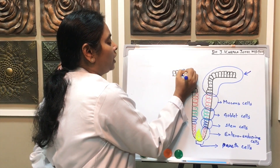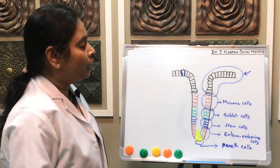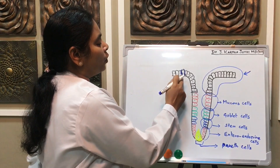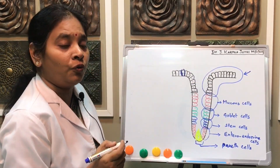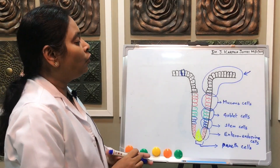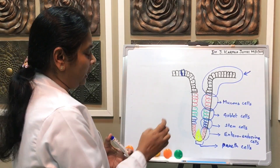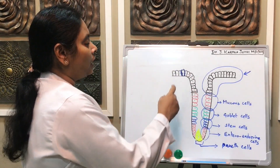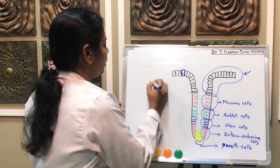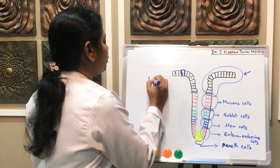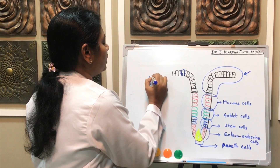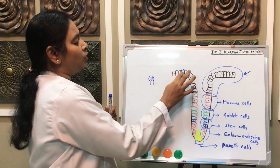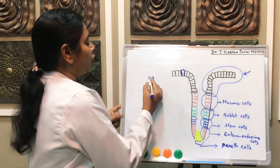These goblet cells are otherwise called as mucus-secreting cells. Along with the simple columnar epithelial cells, we also see goblet cells - one characteristic feature of the small intestine - because in the stomach, we won't see any goblet cells, only mucus-secreting cells. In the small intestine, the cells secreting mucus are goblet cells, which are flask-shaped cells. In the lower portion they are narrow, and in the upper portion they dilate and consist of mucus secretion. During the staining procedure, this mucus disappears, so these empty-looking cells are otherwise called as goblet cells.